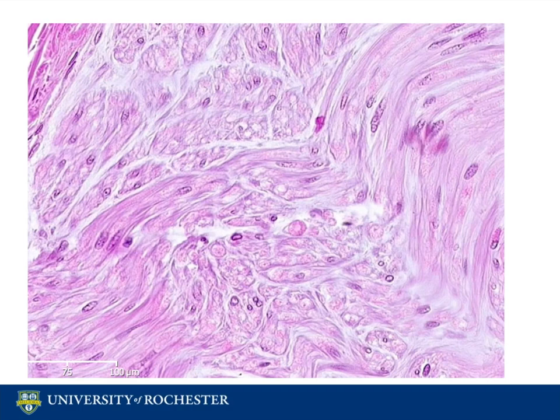At high magnification, we can clearly see a number of nuclei within the fascicles. However, these nuclei do not belong to the neurons. They belong to the Schwann cells that encapsulate the axons of each neuron. The Schwann cells are rich in myelin and form a myelin sheath which acts to insulate the axon so that the action potential can propagate more quickly. This myelin sheath is in turn covered by the last surrounding layer of connective tissue, the endoneurium.